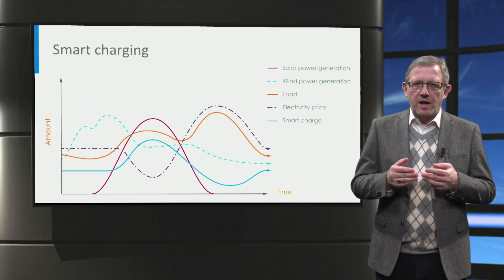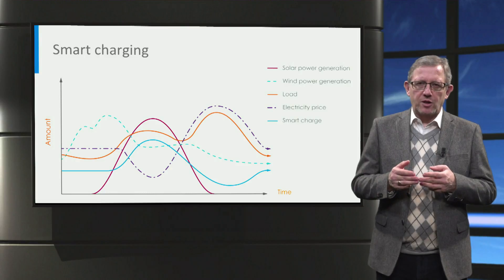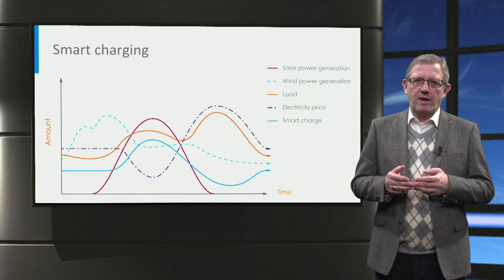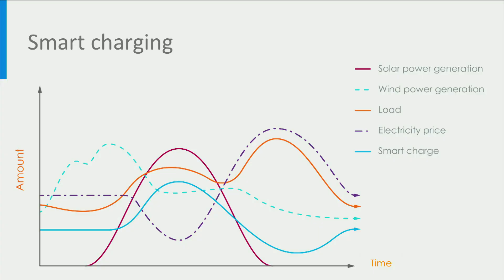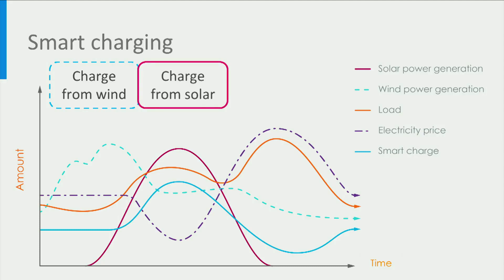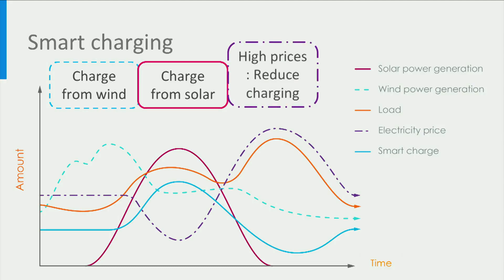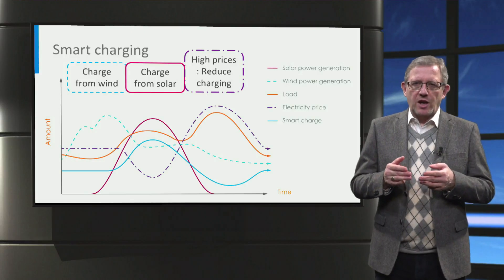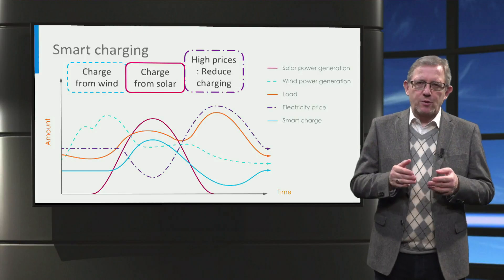The most important use of smart charging is the ability to allow the charging of electric vehicles from renewable energy sources and the possibility to reduce the cost of charging. In this graph, wind generation, solar generation, energy prices, the load on the grid and the electric charging profile are shown as a function of time. The wind and solar power generation have their maximum at the start and middle of the day respectively, while the energy prices and load on the grid reach their peak at the end of the day. With smart charging, electric vehicles can be controlled to charge from wind generation in the morning, then increased to charge from both solar and wind in the afternoon, and reduced in the evening when loading and energy prices are high.